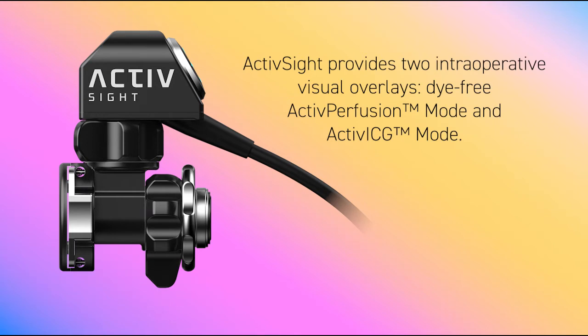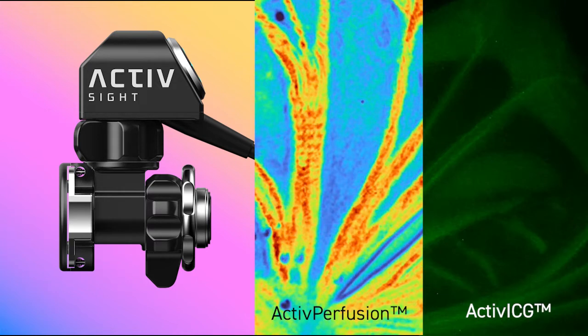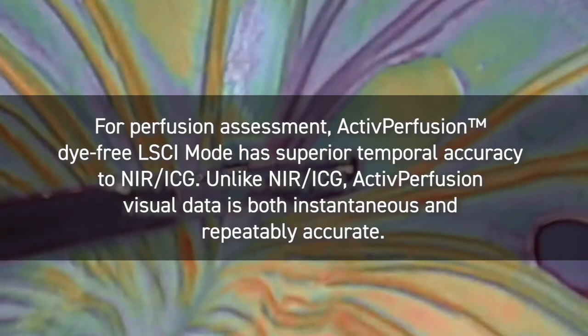ActiveSight provides two intraoperative visual overlays: dye-free active perfusion mode and active ICG mode. For perfusion assessment, active perfusion dye-free LSCI mode has superior temporal accuracy to NIR ICG. Unlike NIR ICG, active perfusion visual data is both instantaneous and repeatably accurate.